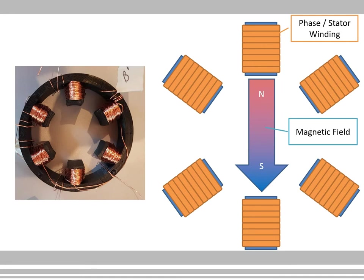Here we can see we've got three coils, or six poles. The top and middle-top and bottom form one set of poles. Going across the diagonal we've got another two poles forming another set — we can think of that as the blue phase — and then the other diagonal going top-left to bottom-right we have the yellow phase.